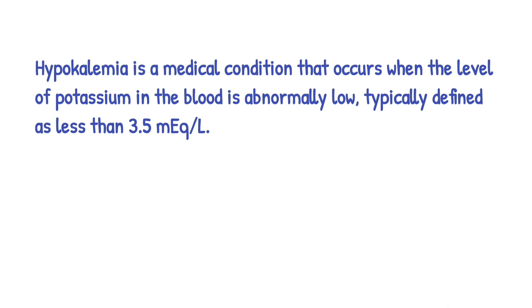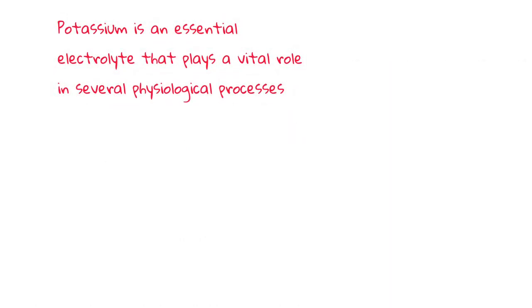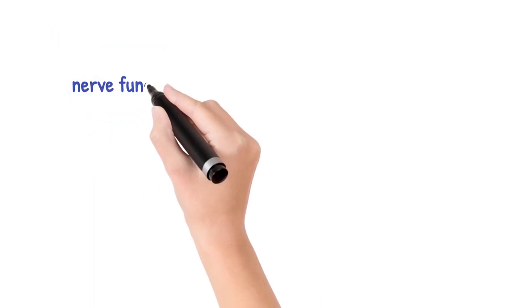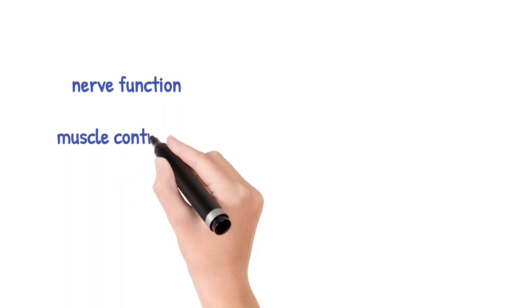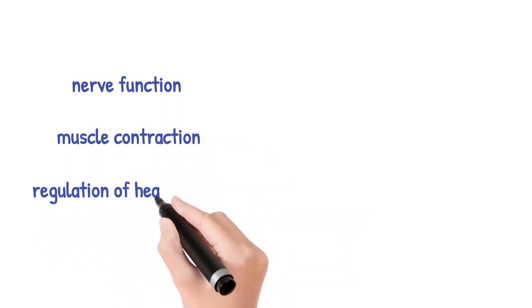The pathophysiology of hypokalemia involves a disruption in the balance of potassium ions in the body. Potassium is an essential electrolyte that plays a vital role in several physiological processes, including nerve function, muscle contraction, and the regulation of heart rhythm.